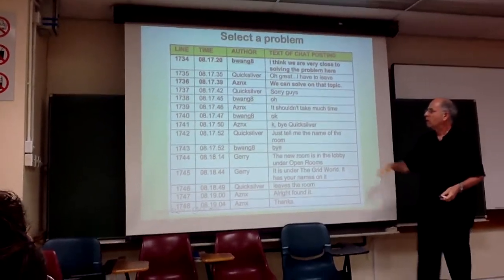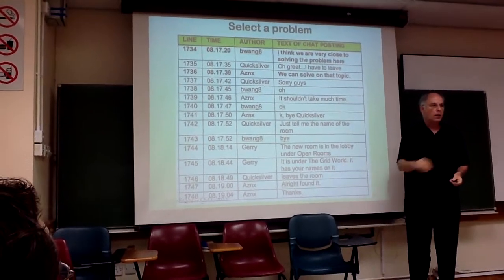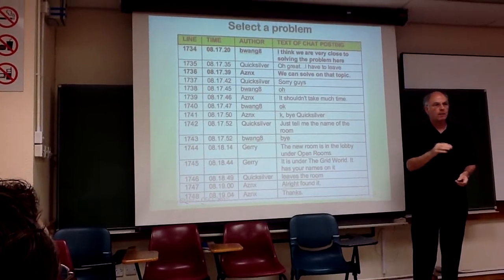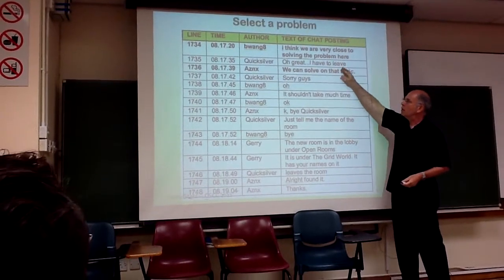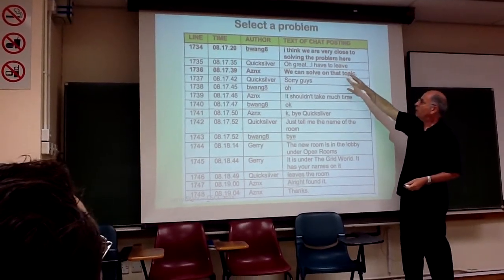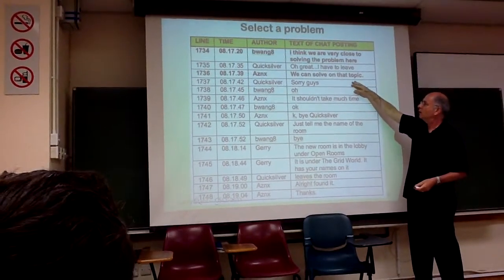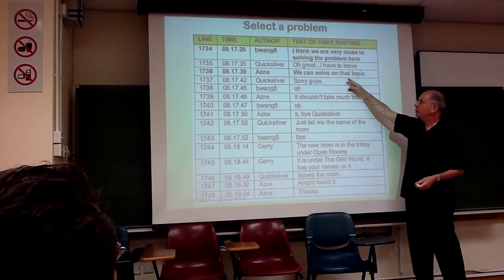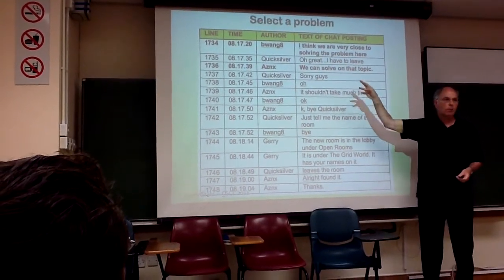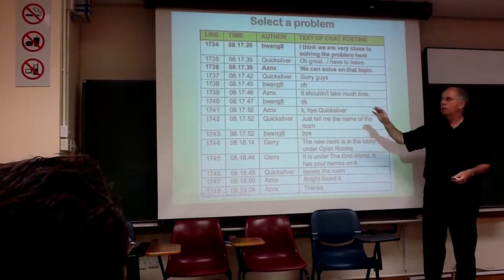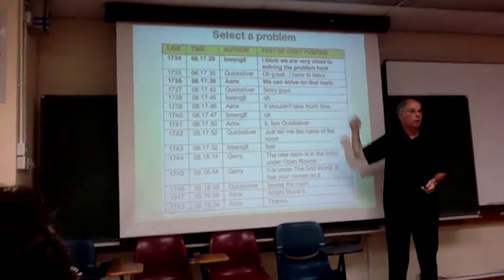I've looked at the chat and broken it into segments. In each segment, what I discovered is that you can see an adjacency pair — I've put them in boldface. Here, one student named Wang says 'I think we're very close to solving the problem.' Another student says one student has to leave, but a third says 'we can solve on that topic.' Here they're selecting a sub-problem of the larger mathematical work; one person proposes they should work on it and another accepts.